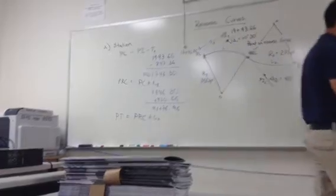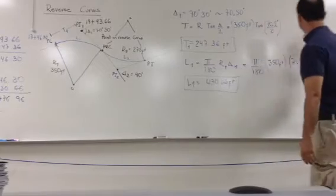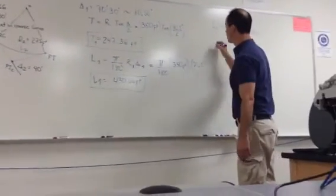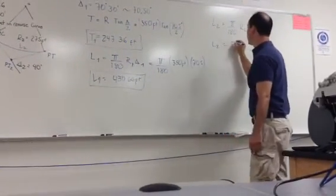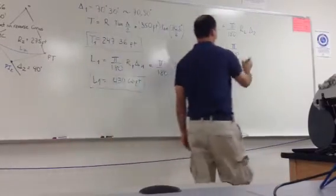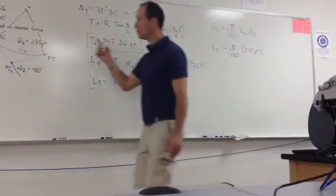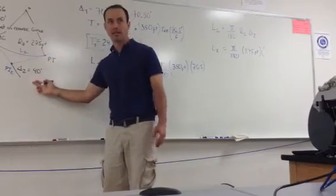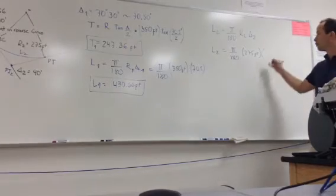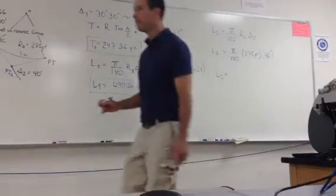So let's go back in here. Alright, so L2 will be equal to what? Pi over 180 times radius 2 times delta 2. Perfect. So now we know pi over 180. What's my radius 2? It's given, 275. And now what's my delta 2? 40.00, correct, which if I pass that into a decimal is still 40, right? So 40 degrees. And so how much will be L2? 191.99.